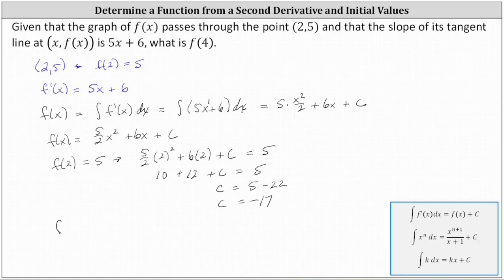So now we know that f(x) is equal to (5/2)x squared plus 6x minus 17.